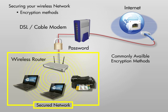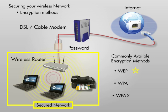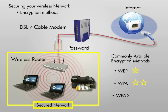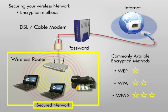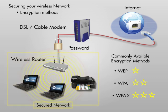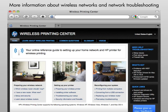The encryption methods commonly available are WEP, WPA, and WPA2. WEP is an older standard and is now considered to be the least secure method. Older network products may only support WEP. WPA is more secure than WEP, and WPA2 is the most secure. Whenever possible, use WPA or WPA2 encryption.